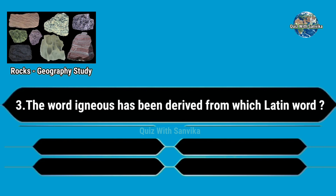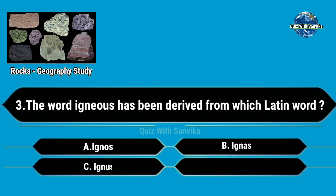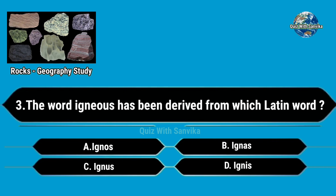The word igneous has been derived from which Latin word? Options are A. Ignos, B. Ignas, C. Ignas, and D. Ignis. Answer is D. Ignis.